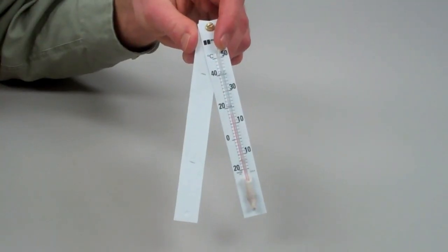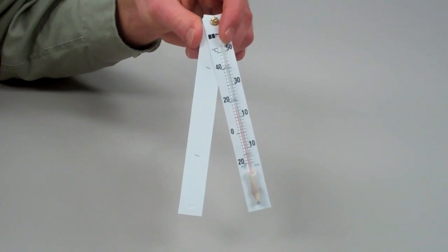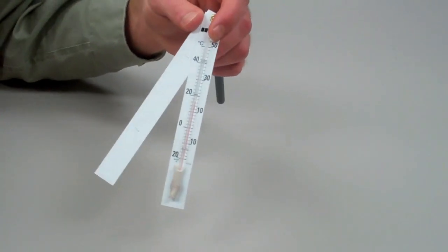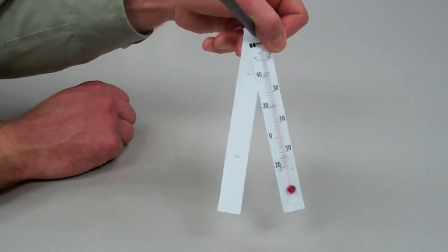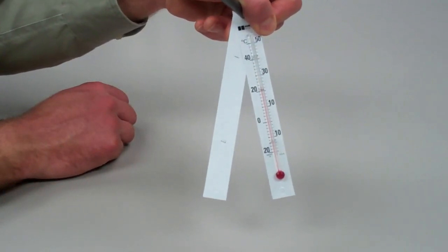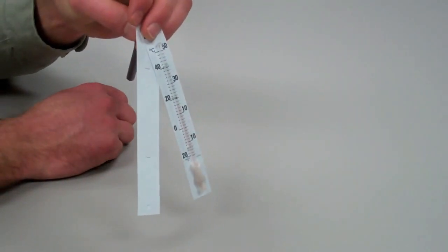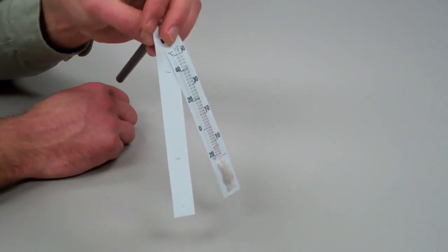Here we have boiled a kettle in the room and raised the relative humidity. We see the wet bulb temperature is now 16 degrees Celsius, while the dry bulb temperature is still 24 degrees Celsius. This is a wet bulb depression of 8 degrees, which corresponds to a relative humidity of 43%.